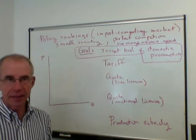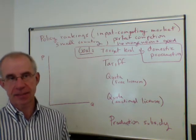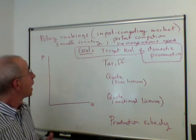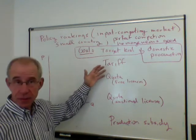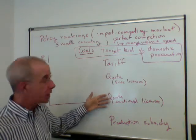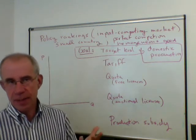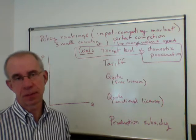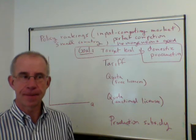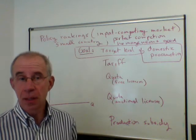We've taken a look at a number of potential policies to help a domestic industry competing with cheaper foreign products. In particular, we've considered quotas with free licenses, quotas with auction licenses, tariffs, and production subsidies. It's useful now to compare these policies to see which one causes the best economic outcome for the country as a whole.